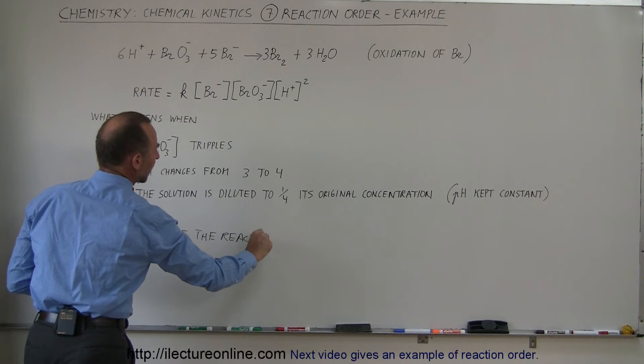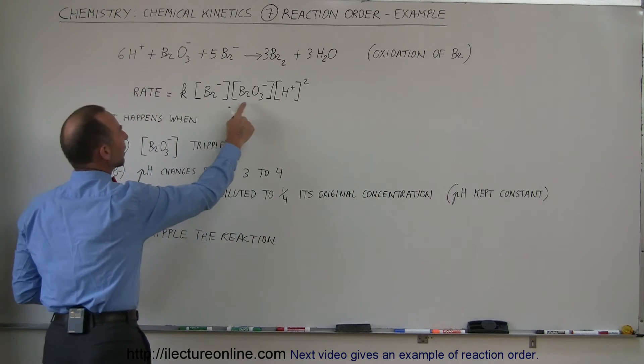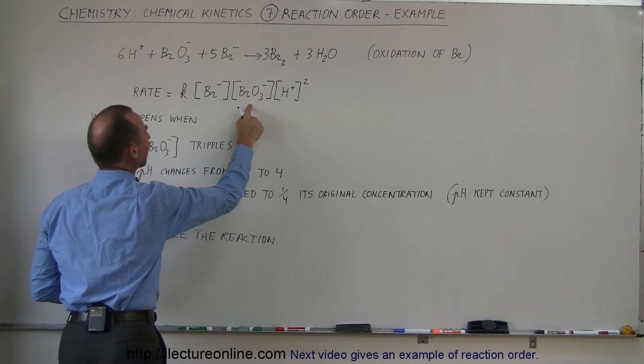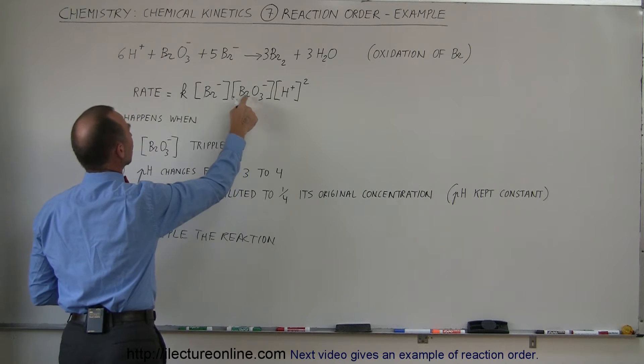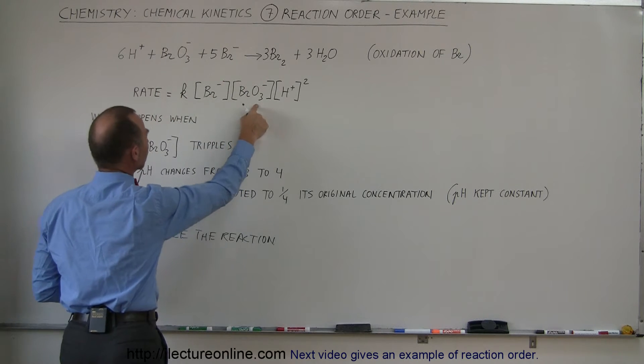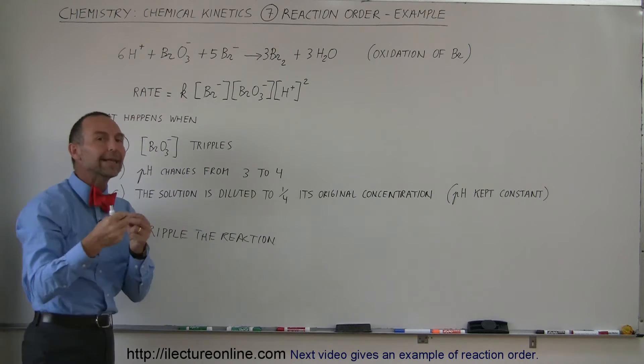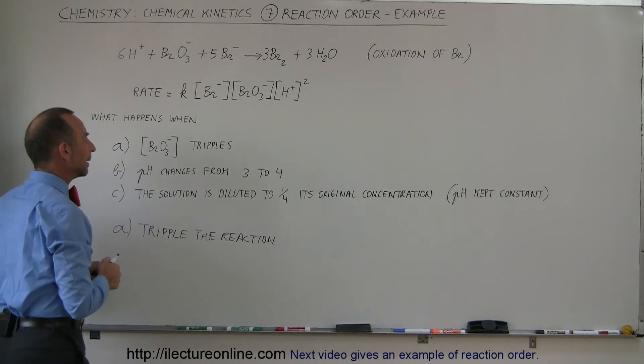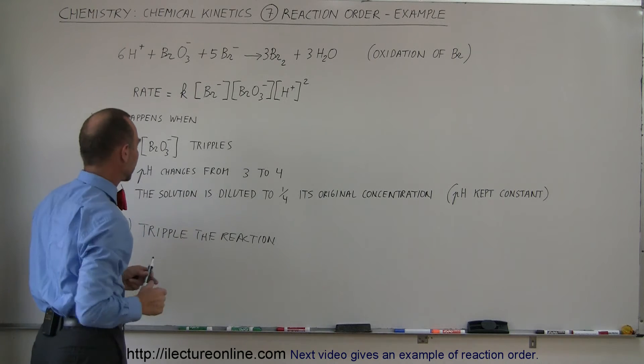And another way to look at that is to say, well, if the order is 1 for the bromate ion, then if I double the concentration, I double the reaction, if I triple the concentration, I triple the reaction, and so forth. It's that linear relationship. And therefore, if we triple it, then we triple the reaction.